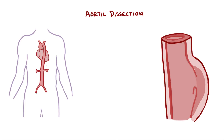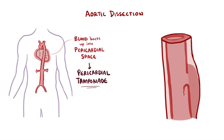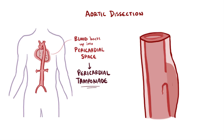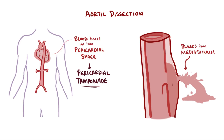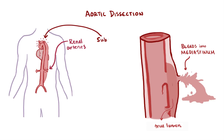Aortic dissections cause a whole bunch of other problems too. Many complications are related to where the blood in the false lumen flows. The blood could flow back up the aorta to the heart and enter the pericardial space, causing pericardial tamponade — a potentially fatal situation. The blood could also puncture through the tunica media and tunica externa and bleed into the mediastinum, which would be rapidly fatal. The tunneling blood could also puncture a hole in the tunica intima and return into the true lumen, or continue tunneling until it reaches a branching artery like the renal or subclavian arteries.